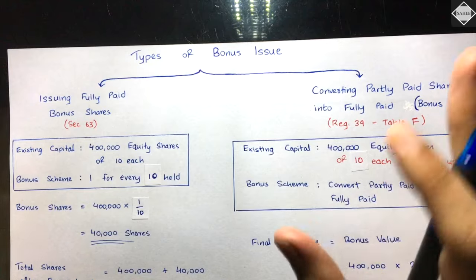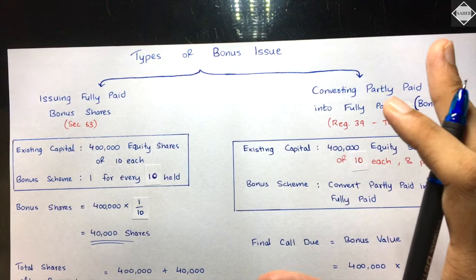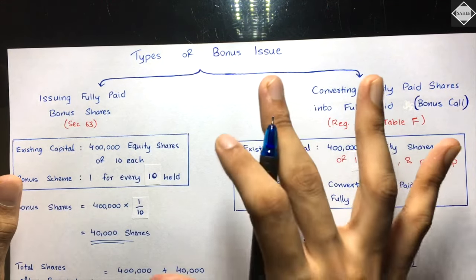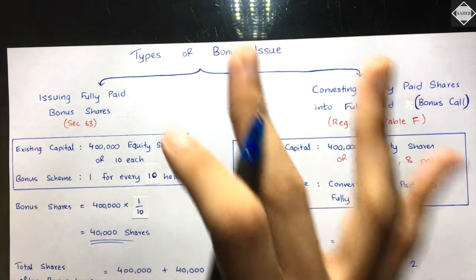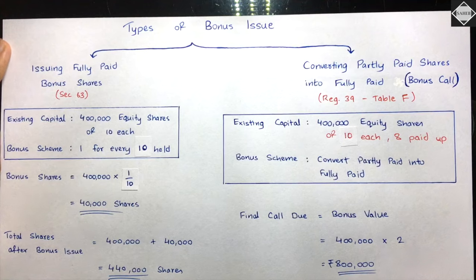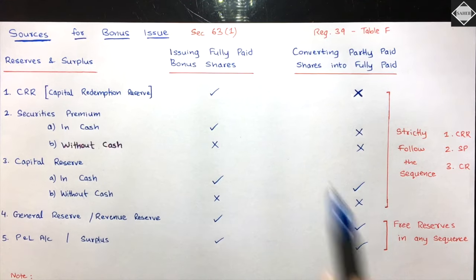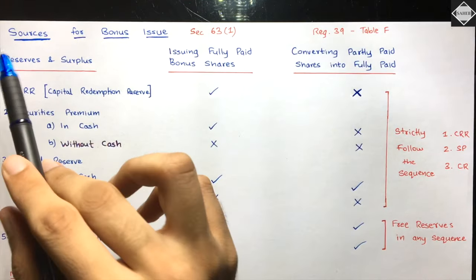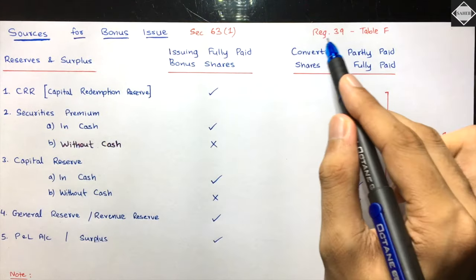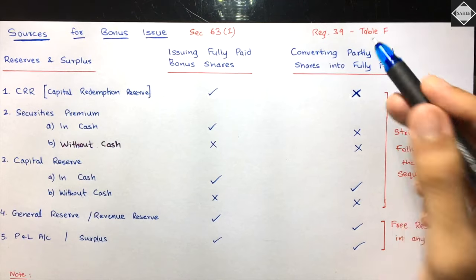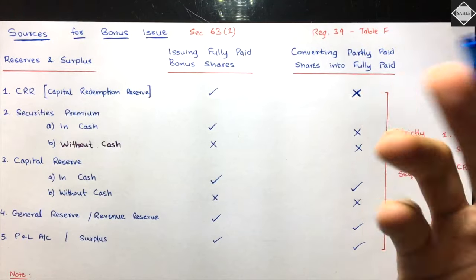The accounting treatment is really simple - it looks complicated but after understanding the provisions of the Companies Act properly, it becomes straightforward. We need to understand Section 63(1) of the Companies Act, which deals with sources for bonus issue for issuing fully paid-up bonus shares, and Regulation 39 Table F under Schedule 1 for converting partly paid-up shares into fully paid-up.